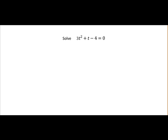Here we are asked to solve the quadratic 3t squared plus t minus 4 equals 0. Now by solve what is meant is find values or one value for t. So to do that we are going to factorize our quadratic and then find values for t.